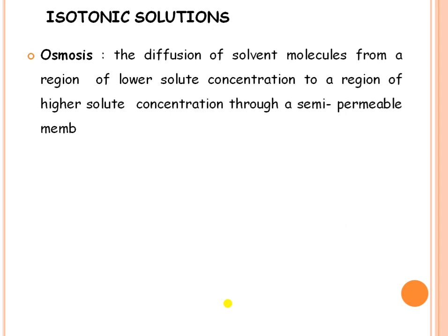Osmosis occurs through a semi-permeable membrane. There are two regions: one region has lower concentration of solute, meaning higher concentration of solvent, and the second region has higher concentration of solute and lower concentration of solvent. From the region with higher solvent concentration, solvent molecules permeate through the semi-permeable membrane into the region of lower solvent concentration. This process is known as osmosis.